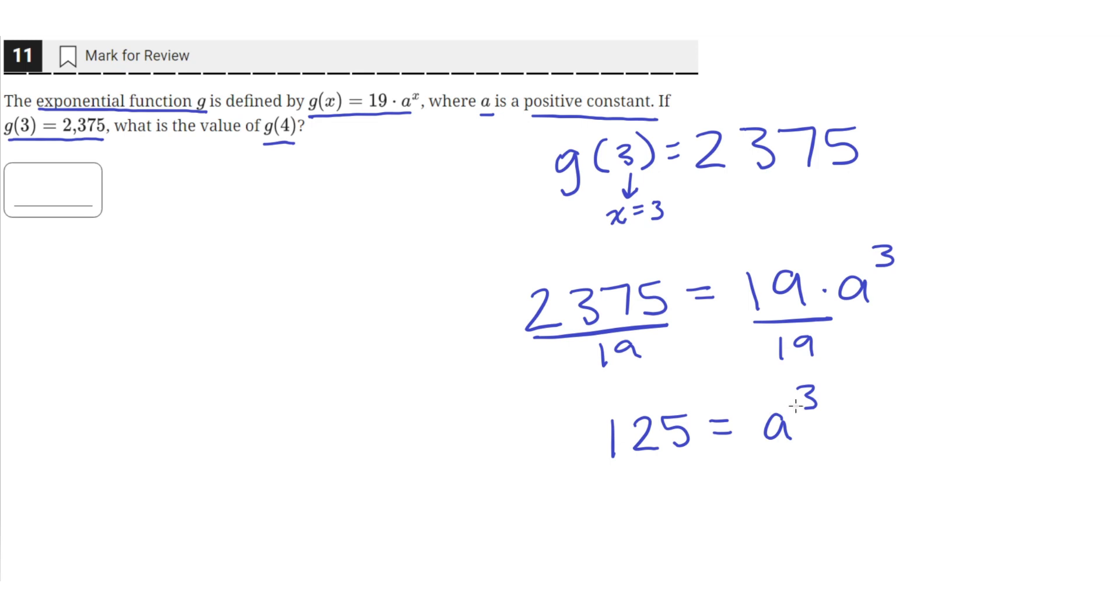And then we can take the cube root of both sides to isolate for the value of a. So we'll just do the cube root of both sides. The 125 cube rooted is equal to 5, and then a cubed cube rooted is just equal to a. So now the value of a is just 5.